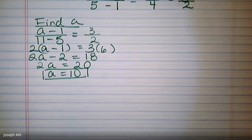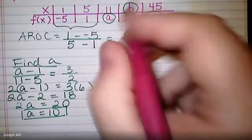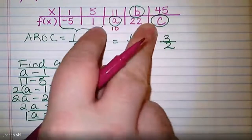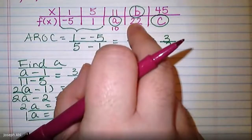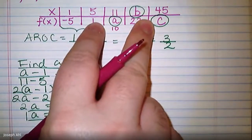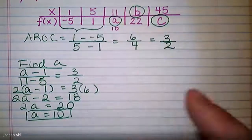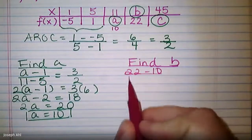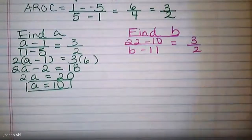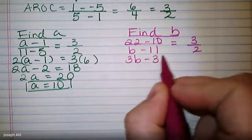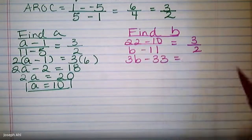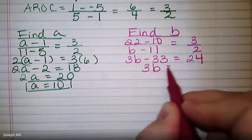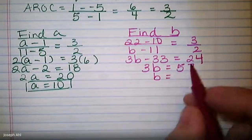Now that a = 10, to find b use the connecting points (11, 10) and (b, 22): (22 − 10) over (b − 11) = 3/2. Cross-multiplying: 3(b − 11) = 2(12), so 3b − 33 = 24. Add 33: 3b = 57, therefore b = 19.